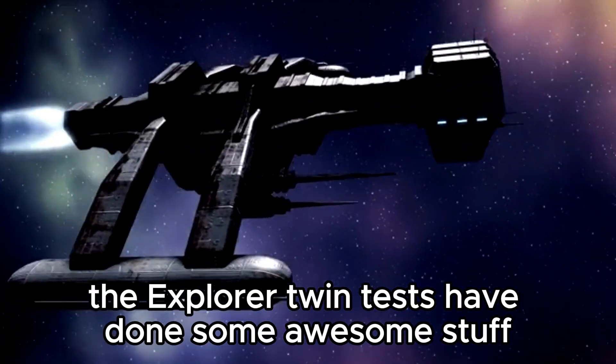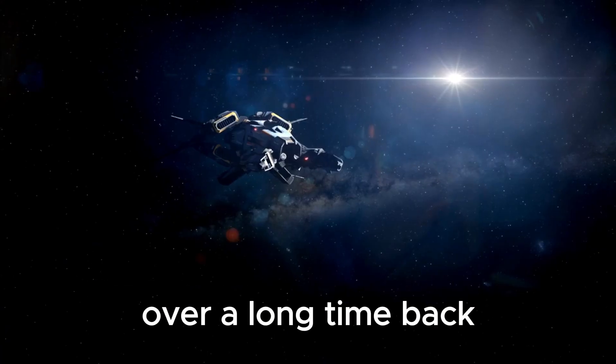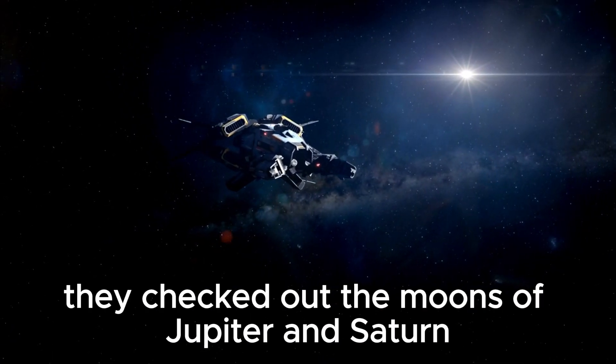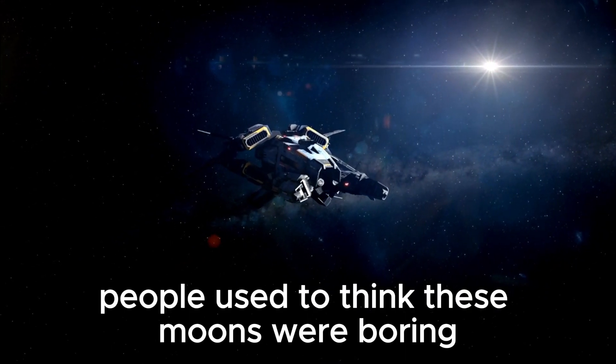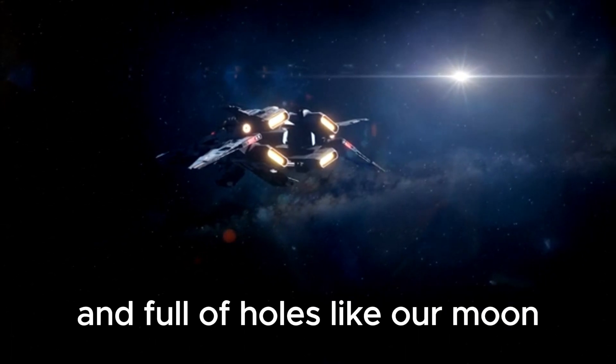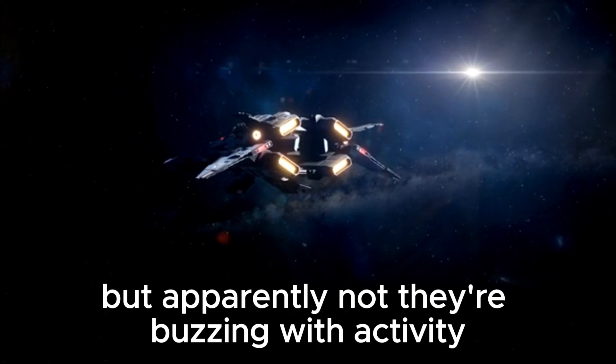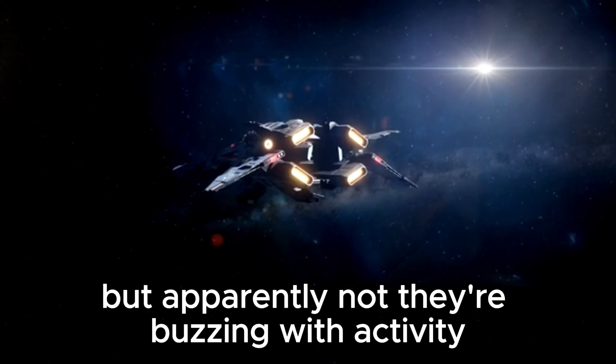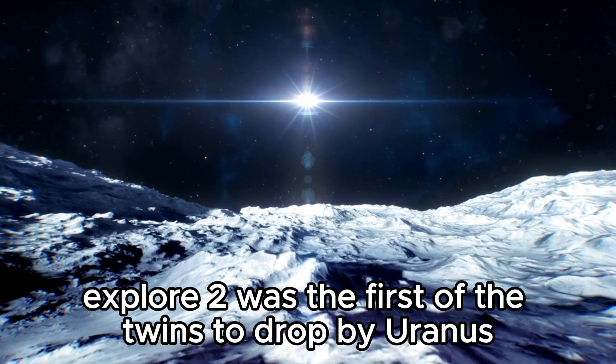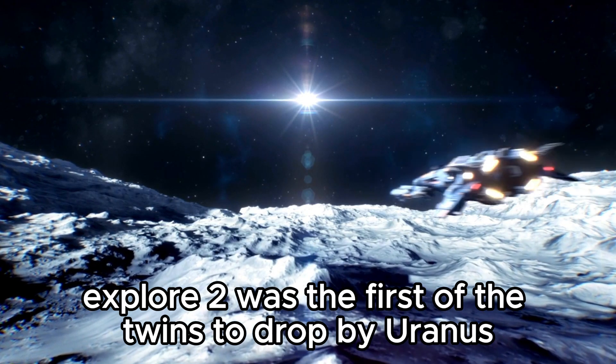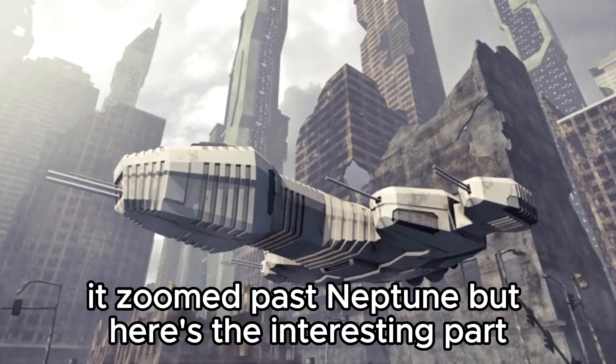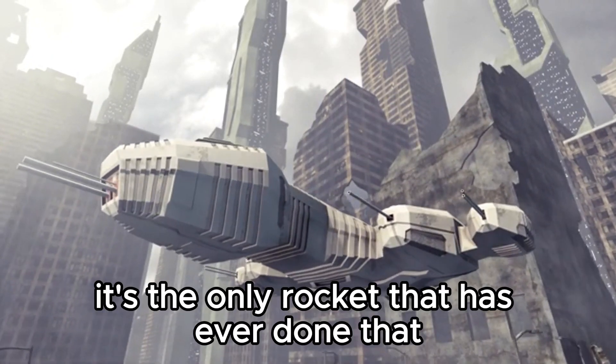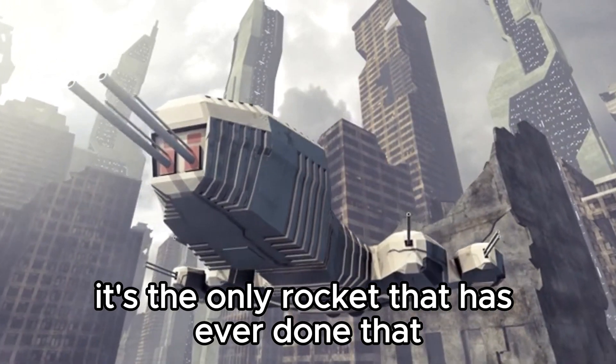The Explorer twin tests have done some awesome stuff. Over a long time back, they checked out the moons of Jupiter and Saturn and completely amazed scientists. People used to think these moons were boring and full of holes like our moon, but apparently not. They're buzzing with activity. Explorer 2 was the first of the twins to drop by Uranus in 1986, and just three years later, it zoomed past Neptune. But here's the interesting part. It's the only rocket that has ever done that.